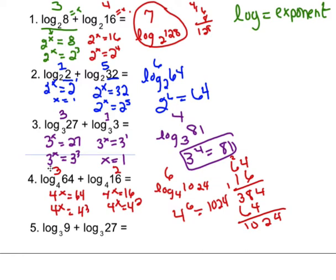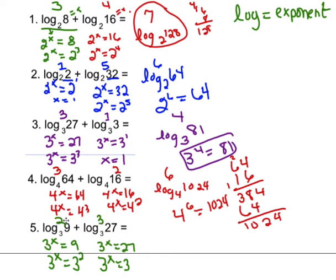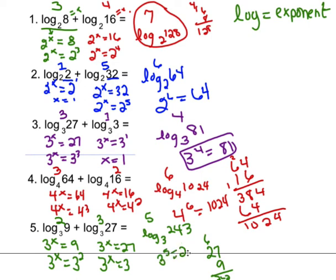On this last one: log₃9 — 3 to the what equals 9, so 3 to the x equals 3 to the second, that's 2. Log₃27 — 3 to the what equals 27, getting the bases the same, that's going to equal 3. So 2 plus 3 is 5, which is the same thing as log₃(27 × 9). 27 times 9 is 243, so 3 to the fifth equals 243.